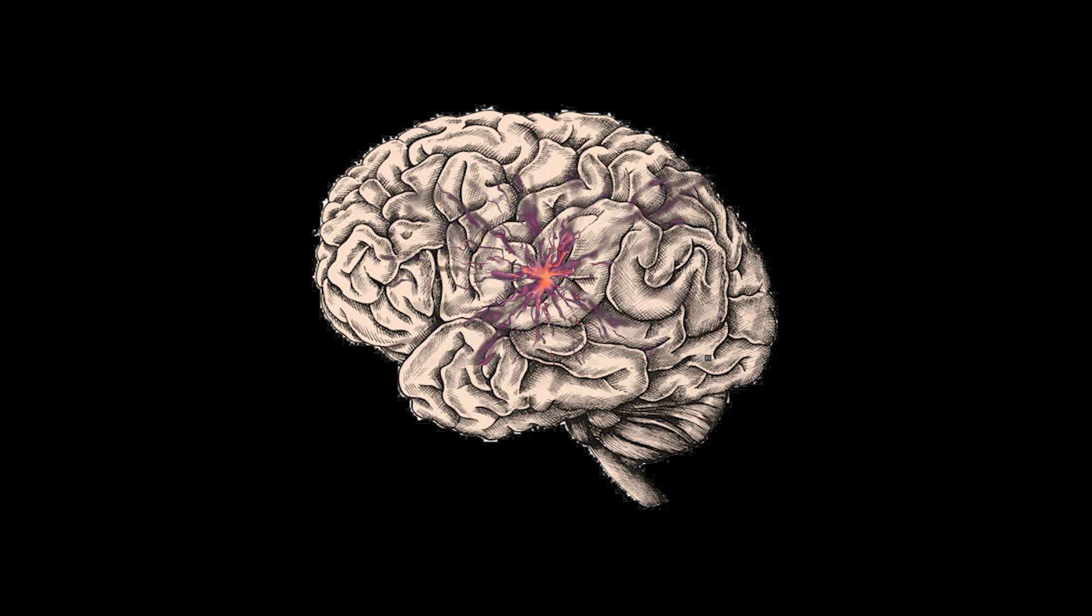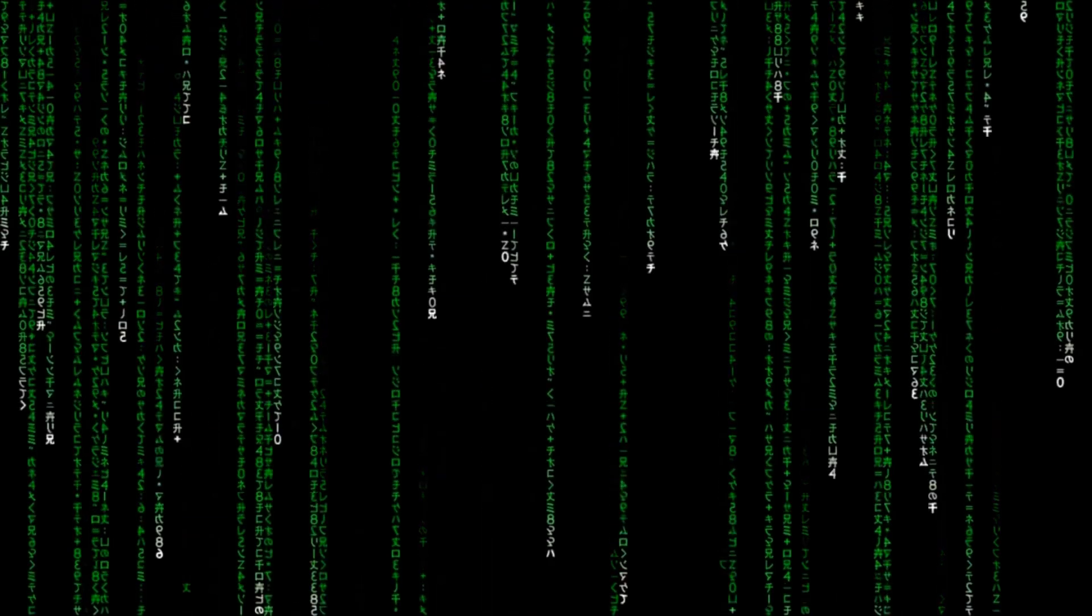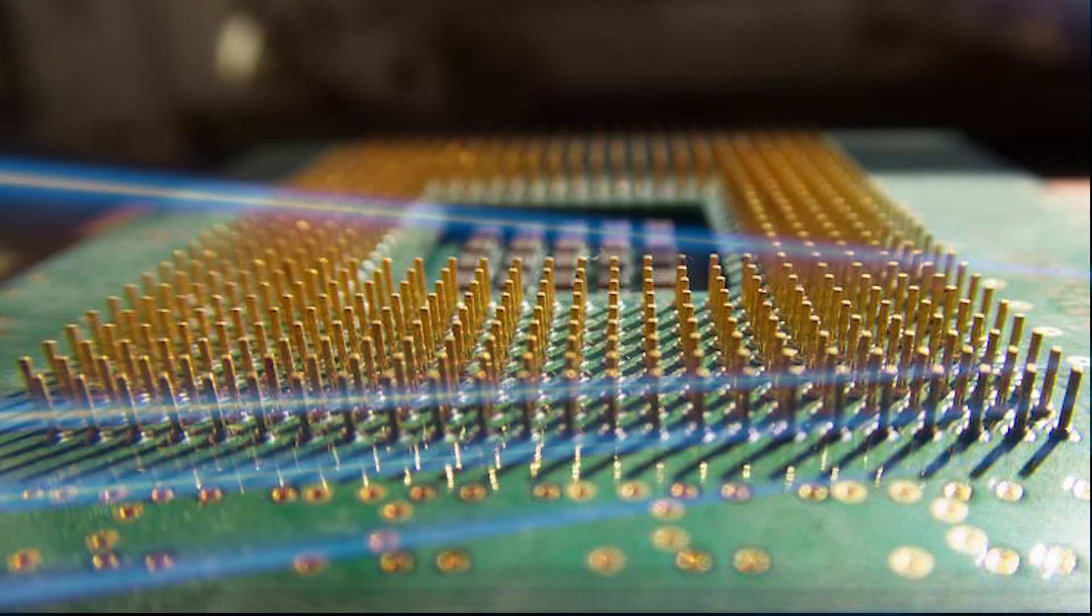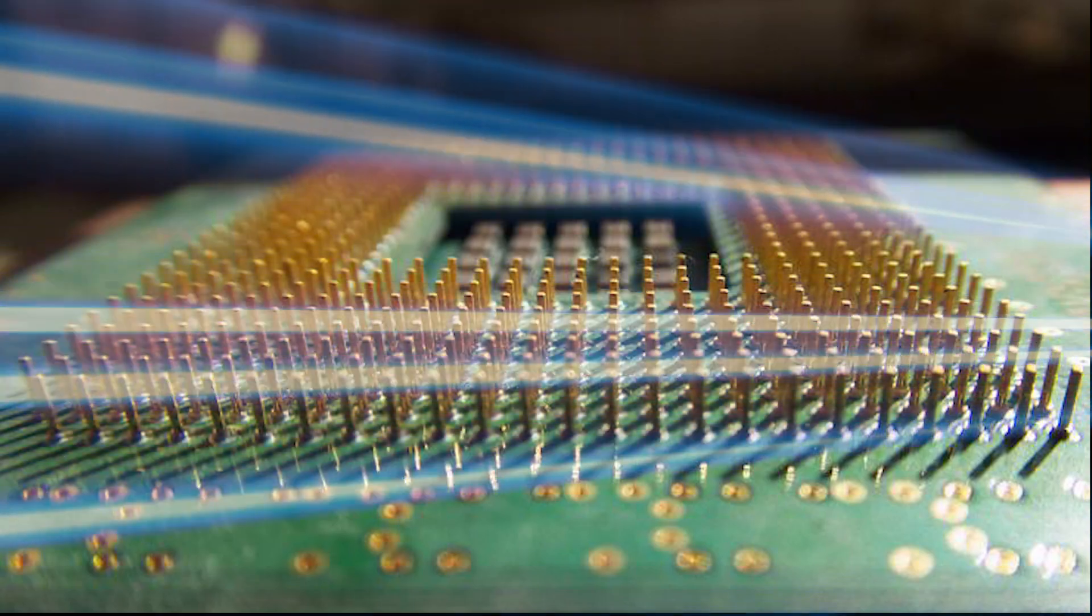When we think about how a computer works, we picture the descending code from the Matrix. What it actually looks like is this. Yes, a simple on and off switch. Well, hundreds and thousands of on and off switches called transistors.